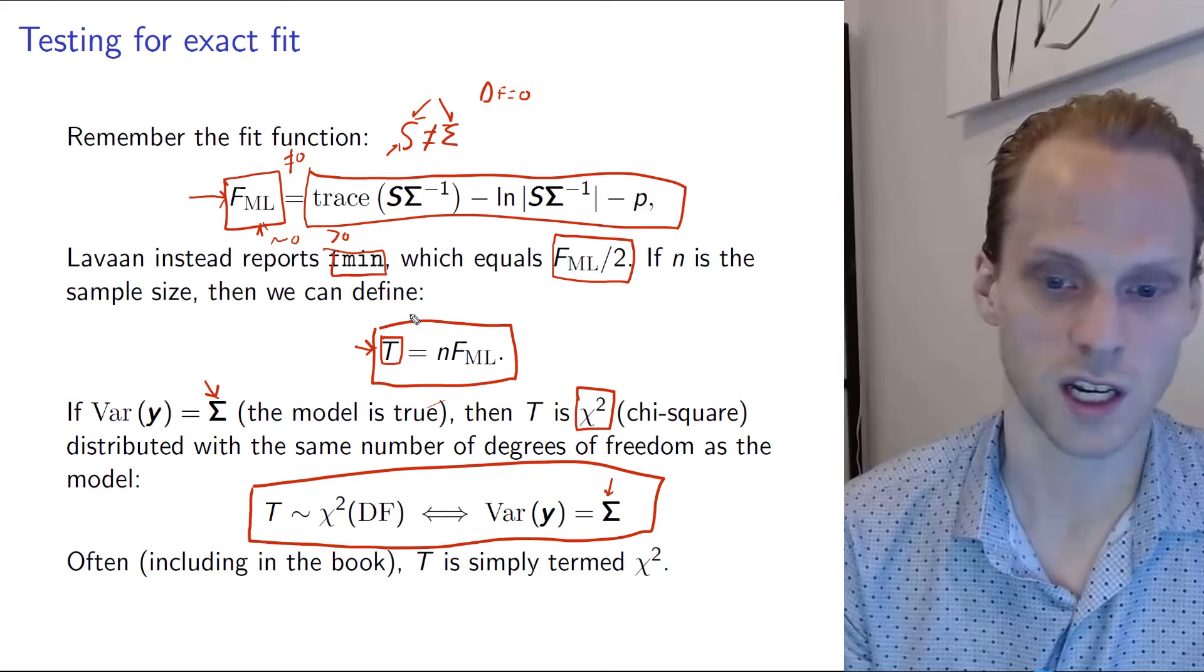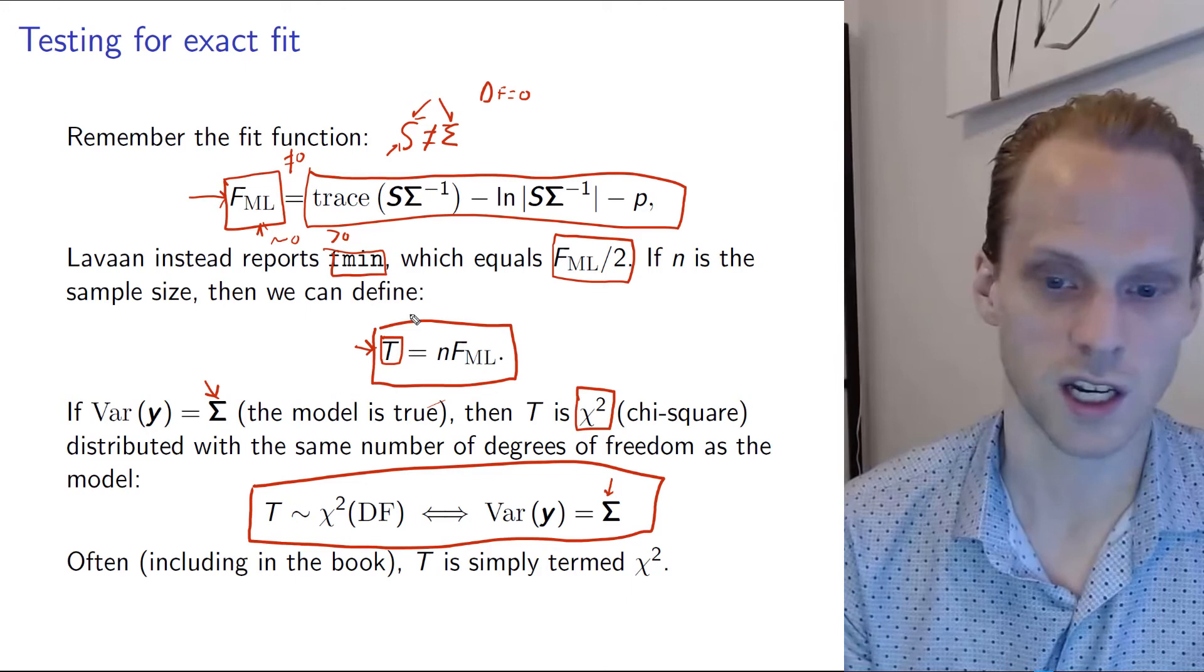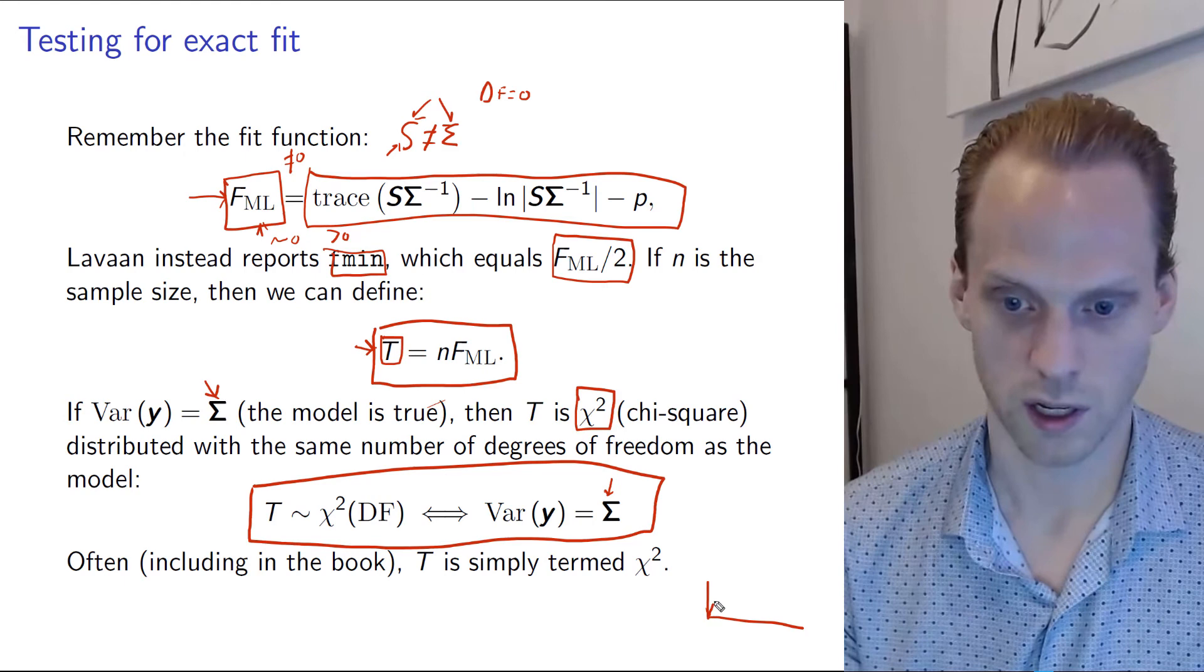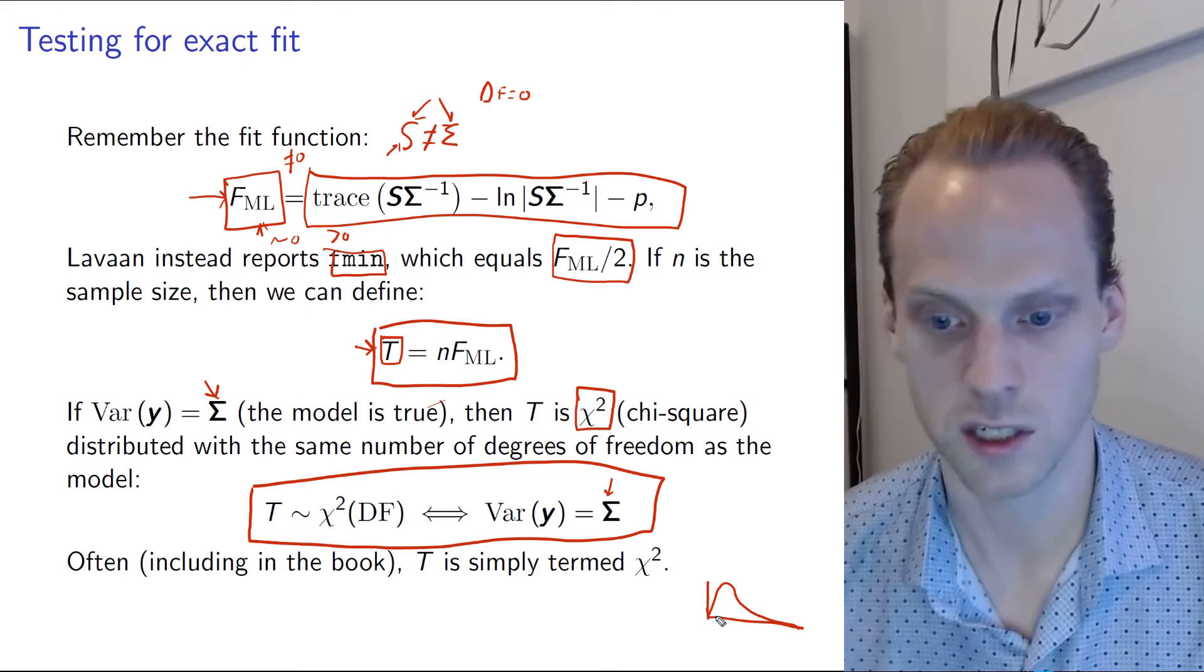Which means it will not exactly be zero. But the chi-square distribution actually looks a bit like this. This is a zero point and it will have a bit of a shape like this. So t is near zero most of the time, but it can actually be quite far from zero as well with some probability.